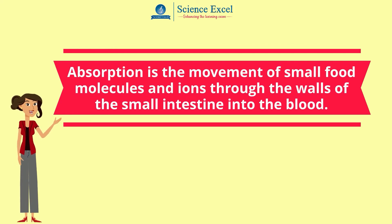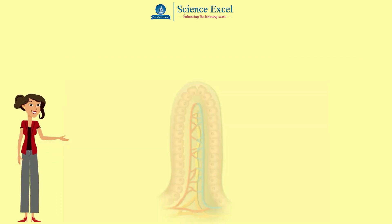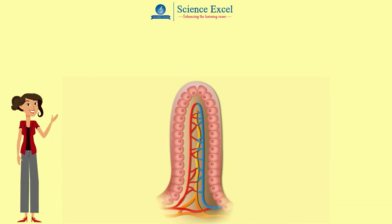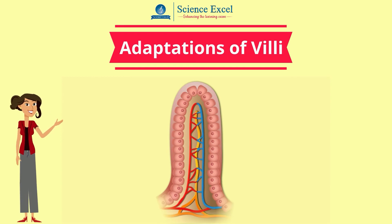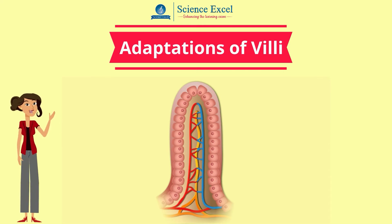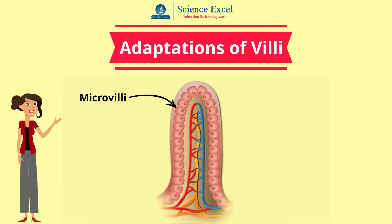The small intestine plays a major role in absorption. The structure of the villi is specially adapted for food absorption. Each villus has cells which have smaller projections called microvilli on them. This gives the inner surface of the small intestine a very large surface area.